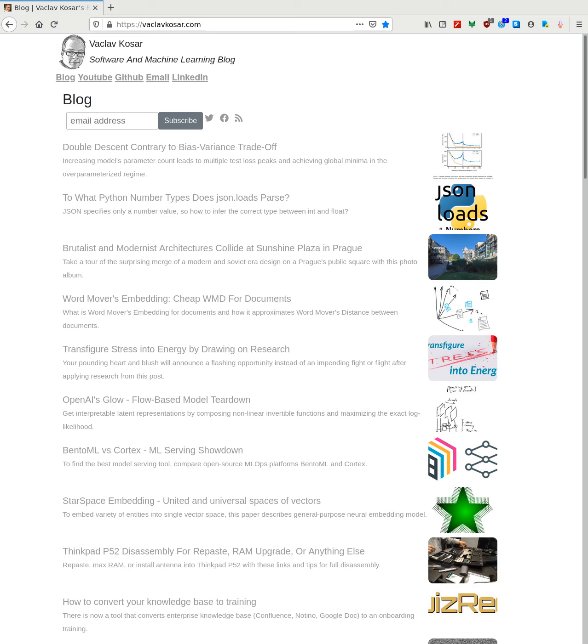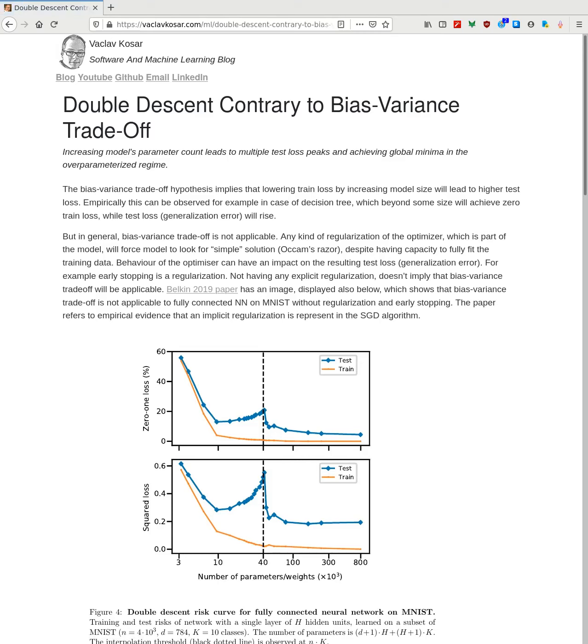Increasing model's parameter count leads to multiple test loss peaks and achieving global minima in the over-parameterized regime. Double descent contrary to bias-variance trade-off.